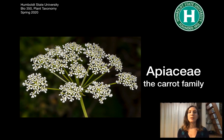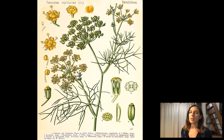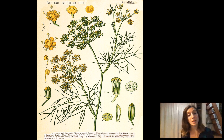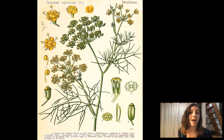Hello, botanists. We are here to talk about Apiaceae, the carrot family. This has a lot of well-known species including fennel and cilantro, lots of carrots, and lots of bad stuff.